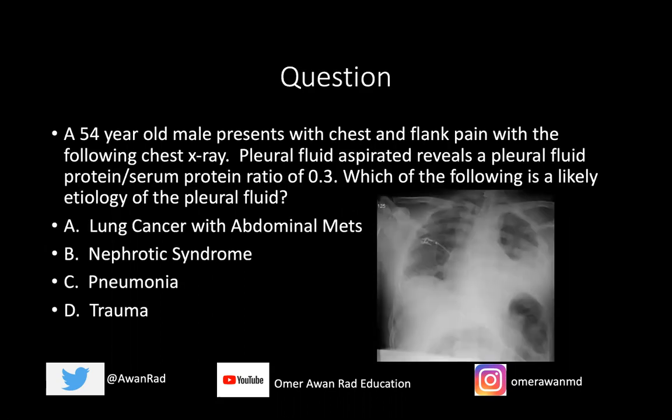We're going to start with a high-yield question like we always do. This is a 54-year-old male who presents with chest and flank pain with the following chest x-ray. The pleural fluid that was aspirated reveals a pleural fluid protein to serum protein ratio of 0.3. Which of the following is a likely etiology of the pleural fluid? Is it lung cancer with abdominal mets, nephrotic syndrome, pneumonia, or trauma?